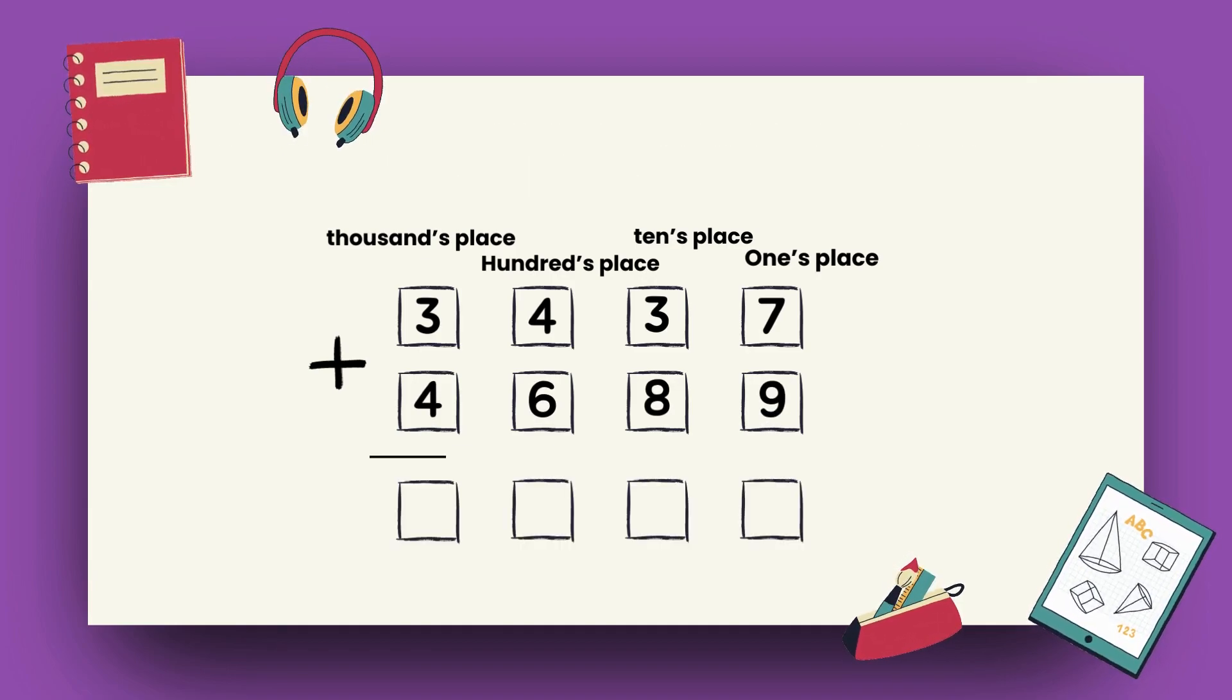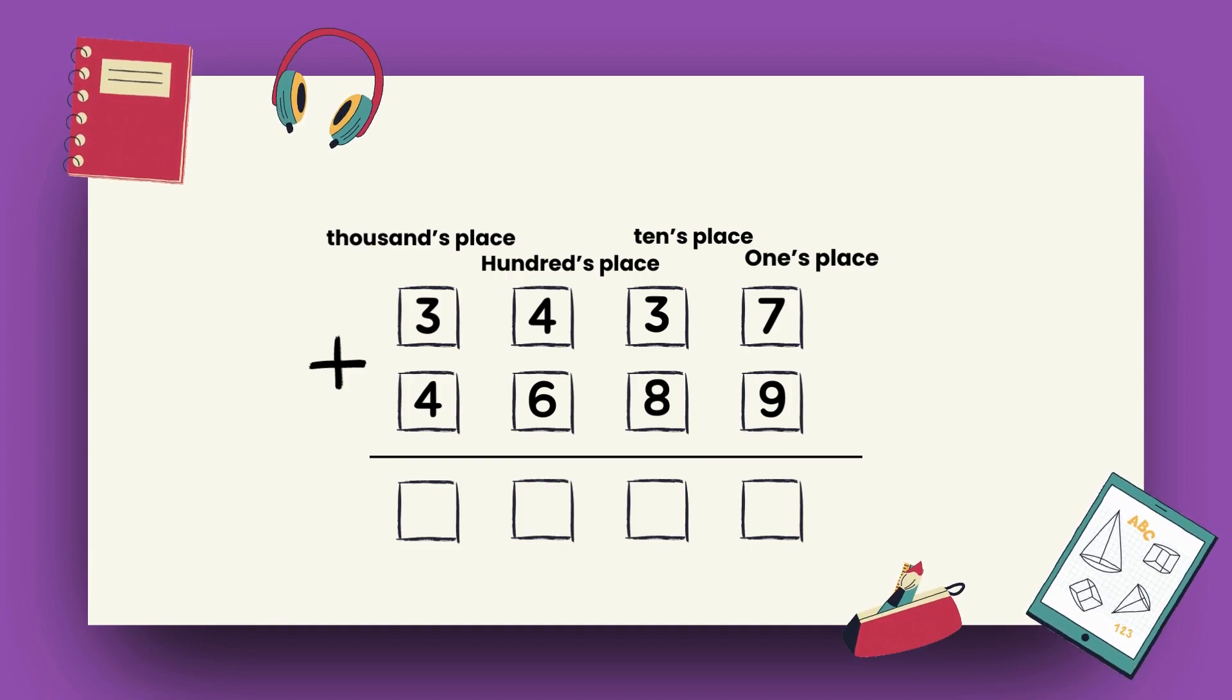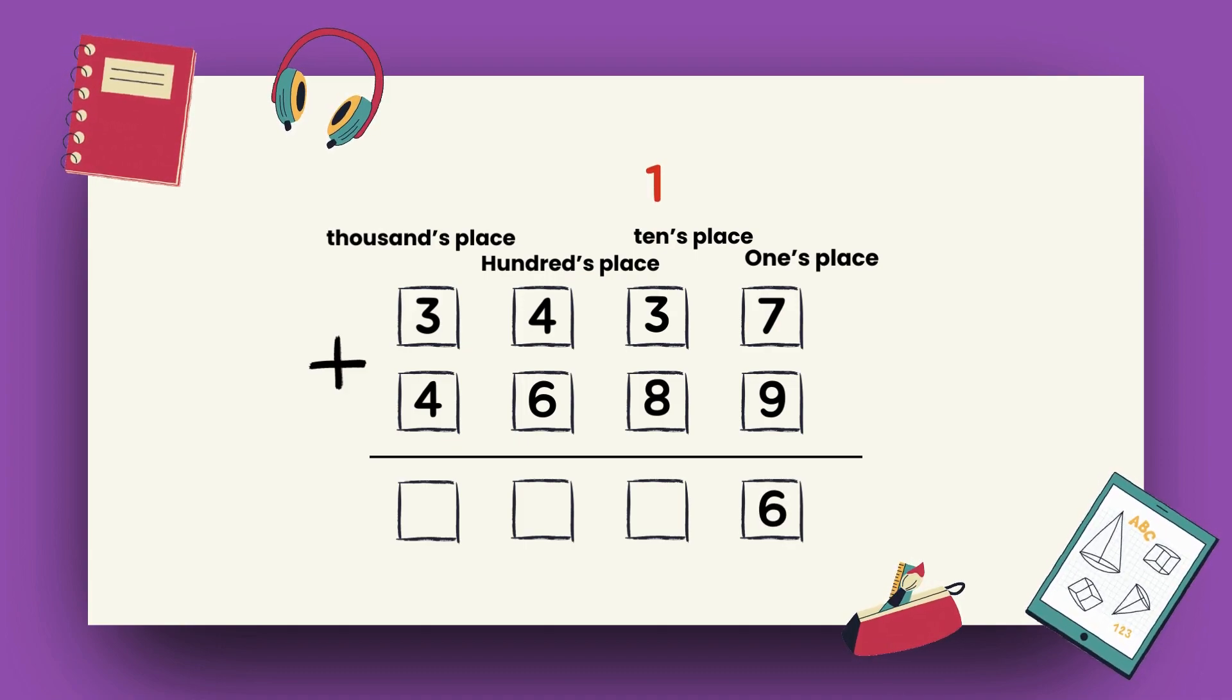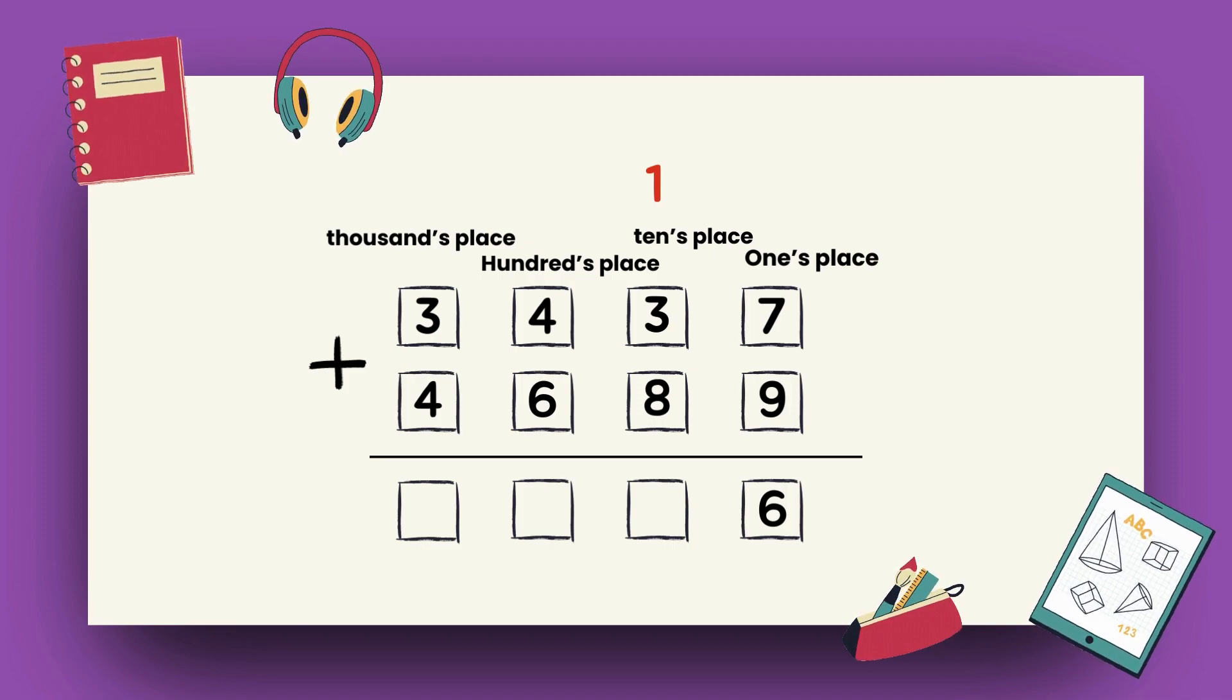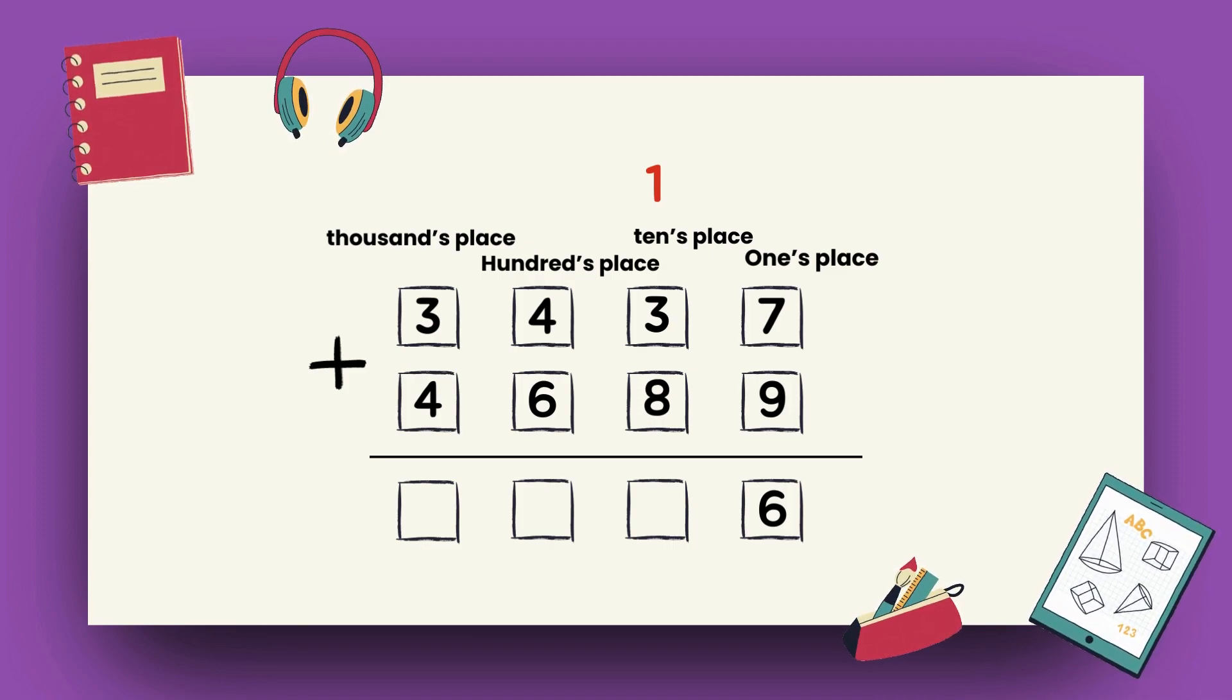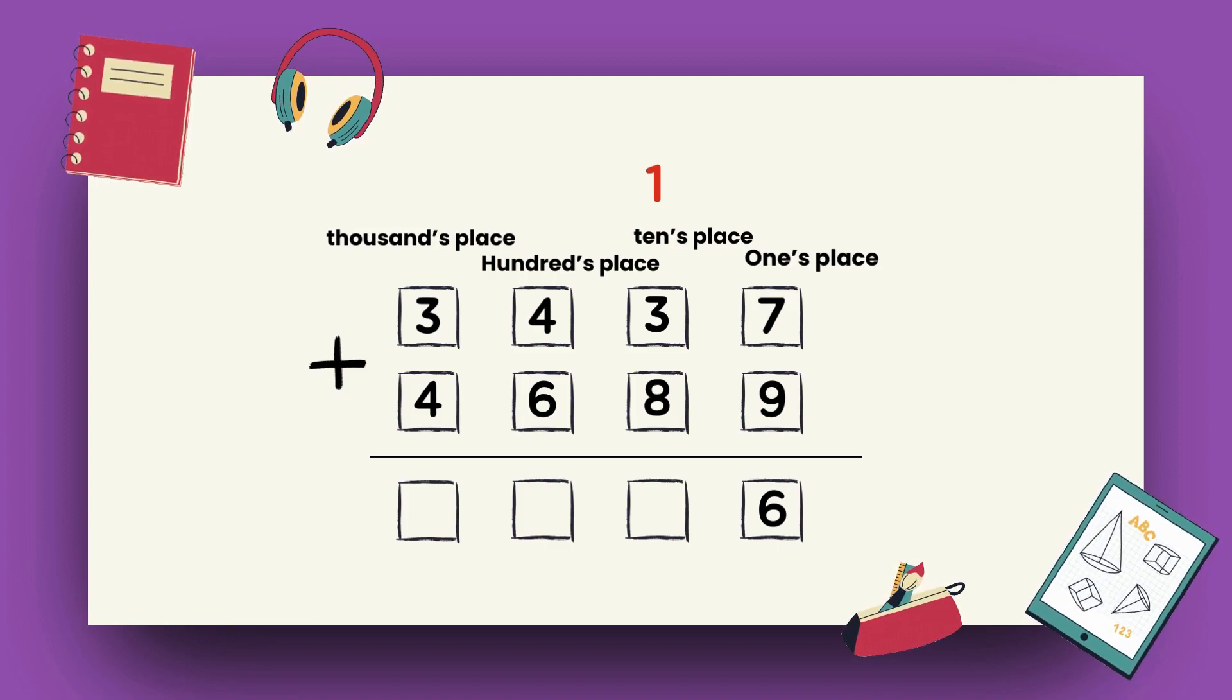Let's start by adding digits at 1's place. 7 plus 9 becomes 16. 6 comes at 1's place and 1 goes to carry. Then moving to 10's place, 3 plus 8 plus 1 becomes 12. 2 comes at 10's place and 1 goes to carry.